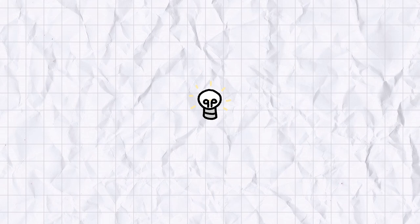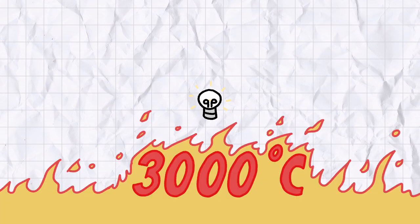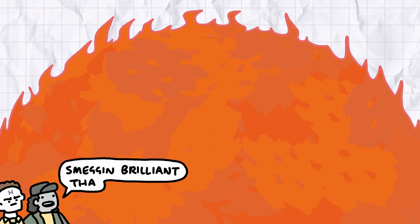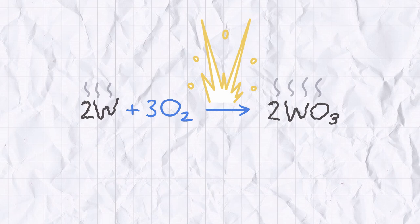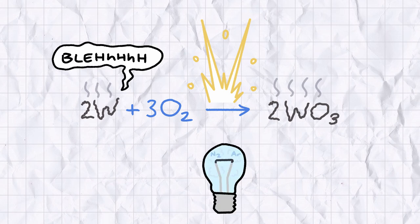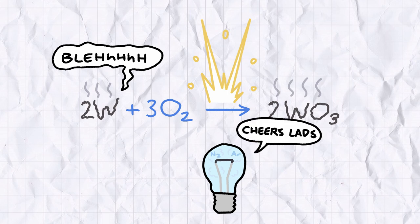Tungsten filaments can reach temperatures as high as 3,000 degrees Celsius, only a few hundred degrees cooler than the surface temperature of a literal red dwarf star. To prevent the tungsten from immediately oxidizing in the air to form tungsten trioxide, a reaction that would be very bright but would burn out the filament in about 2.6 millishakes of a lamb's tail, light bulbs are filled with a mixture of argon and nitrogen gas to sustain the glow for as long as possible.